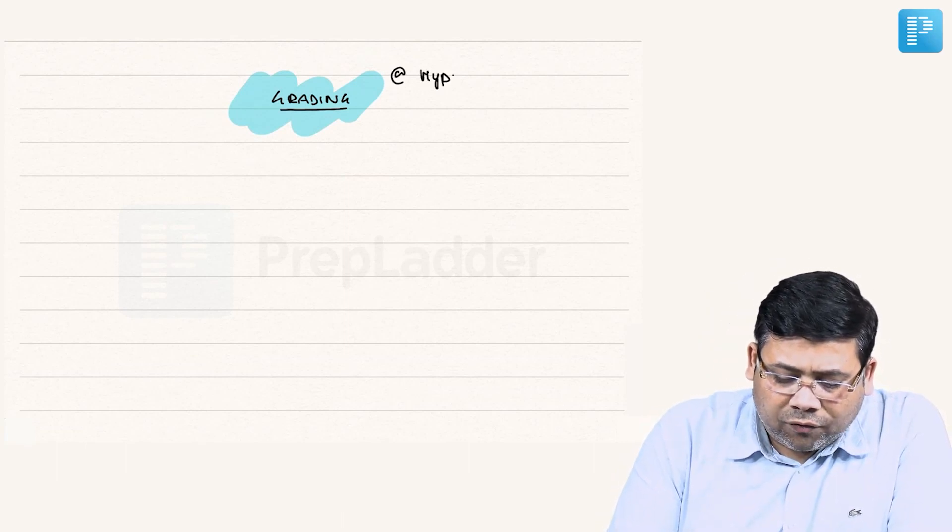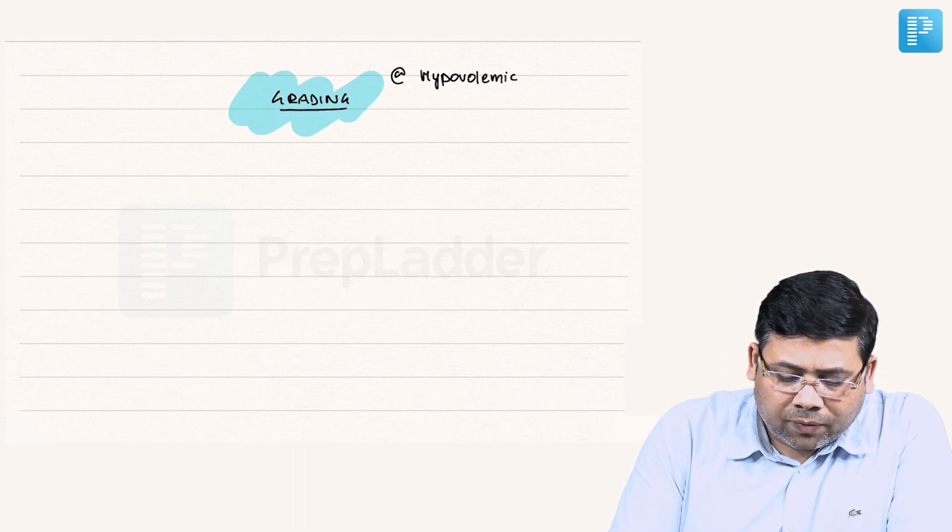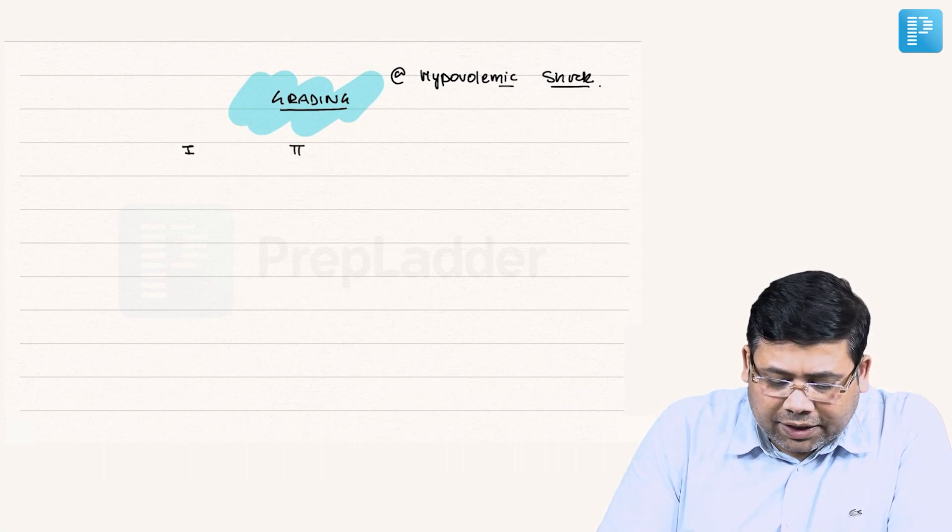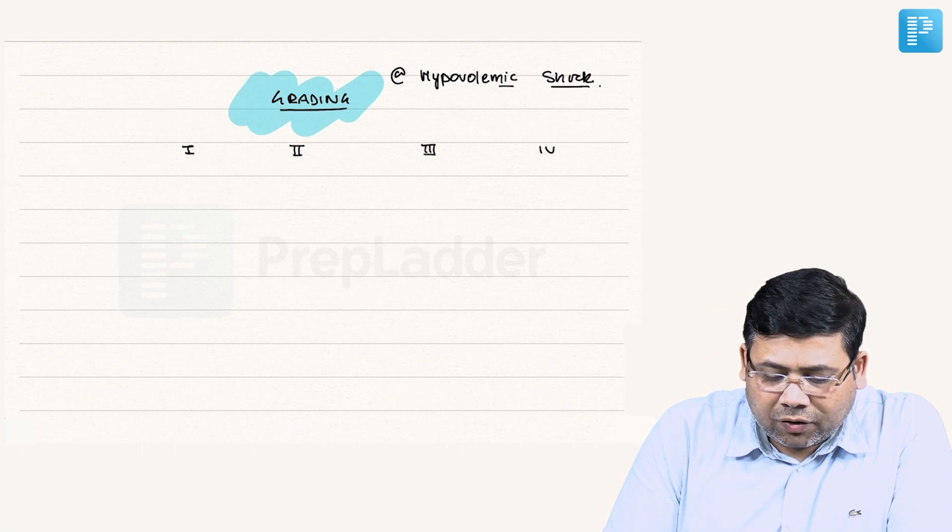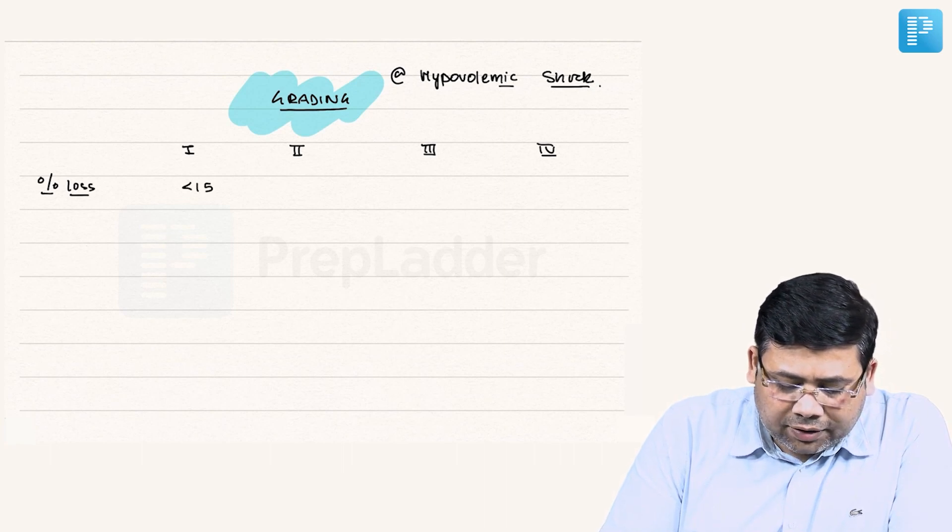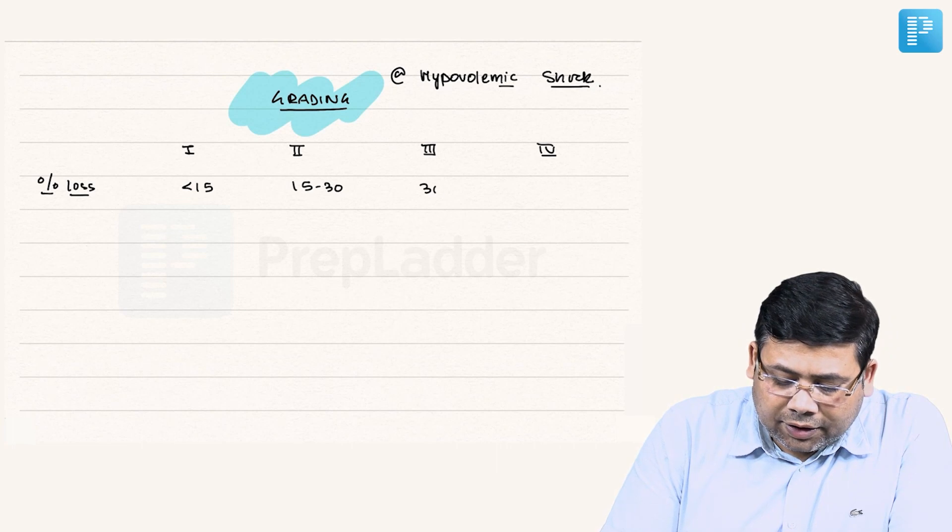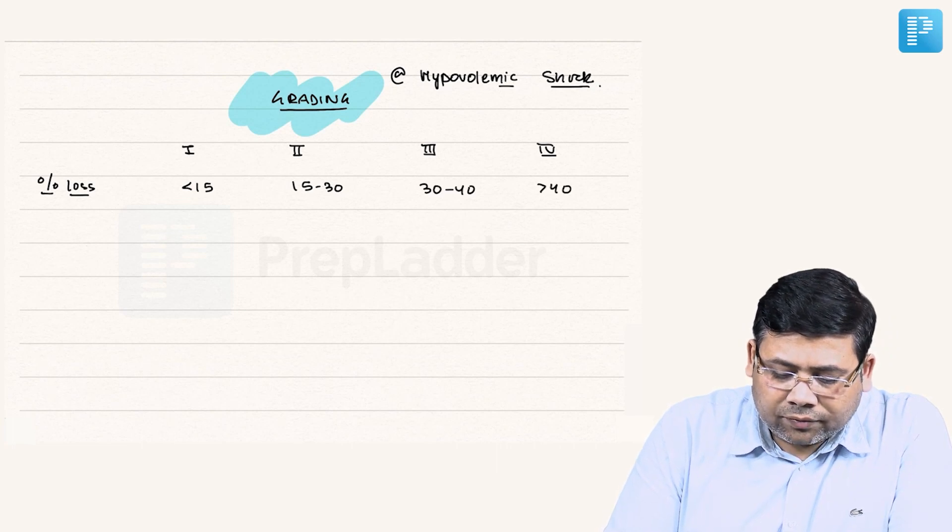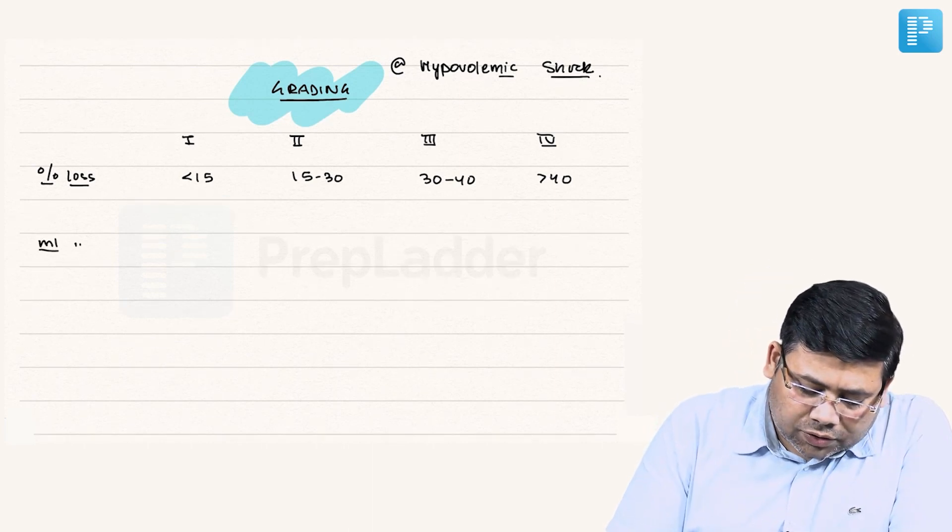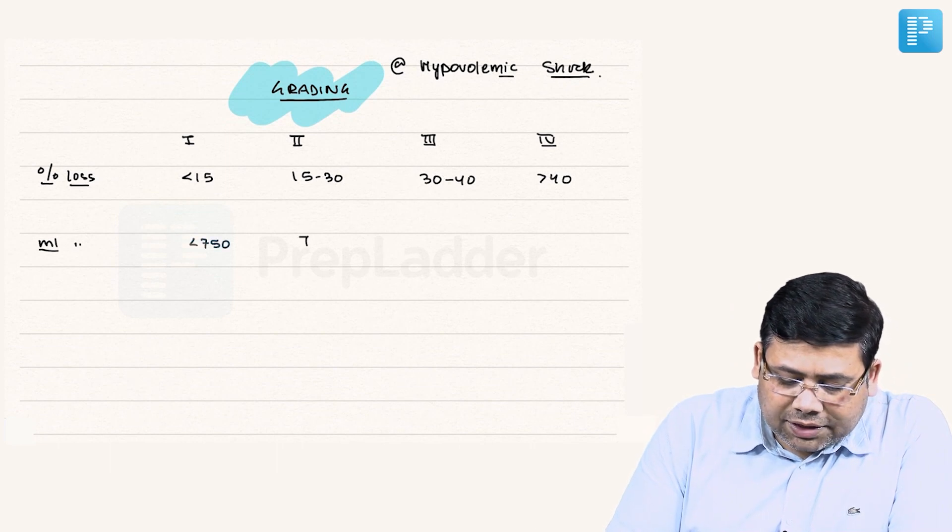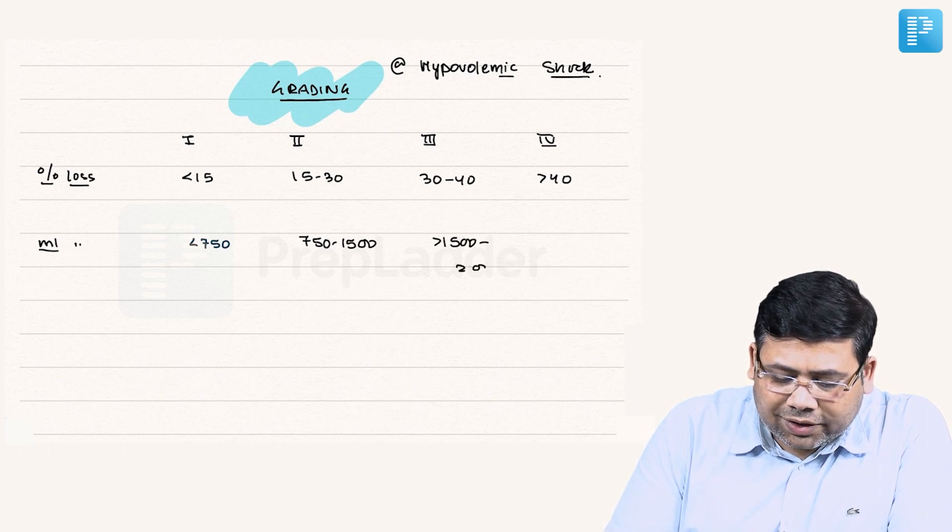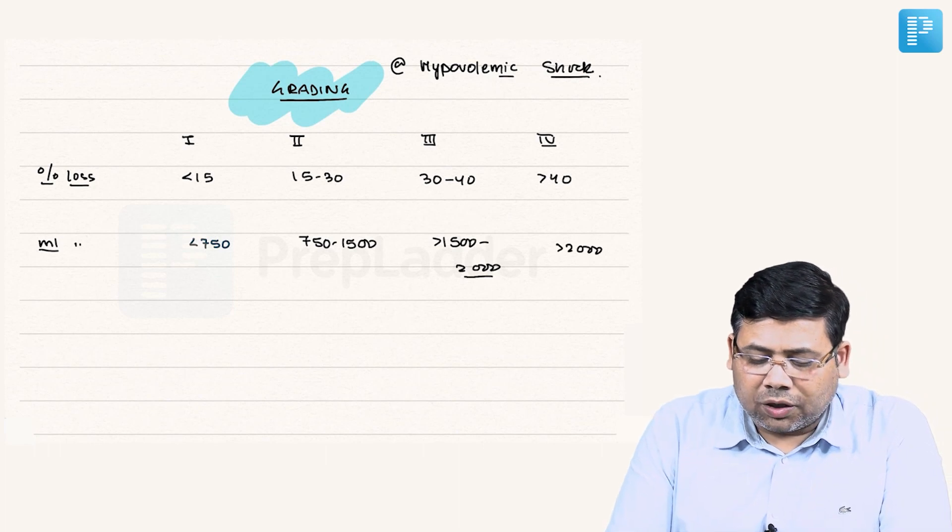Grading of hypovolemic shock is very important. This is evident on the basis of percentage blood loss, or on the basis of ml blood loss, or on the basis of some clinical factors. If we talk about percentage loss: less than 15%, 15 to 30%, 30 to 40%, and more than 40%. In terms of ml loss: less than 750, 750 to 1500, 1500 to 2000 ml, and more than 2000 - this is grade 4.